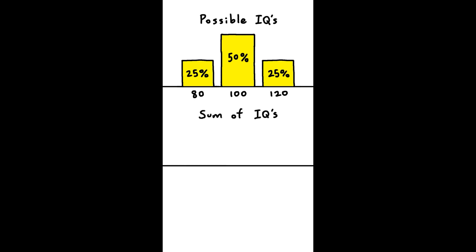Let's simplify things to find out why. We'll make it so that there are only three possible IQs, 80, 100, and 120, with 100 being more common. So this is our IQ distribution. Now if we add two random IQs together, our possible outcomes are 160, 180, 200, 220, and 240, which is very symmetric.